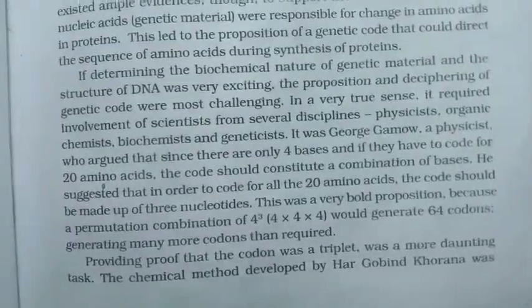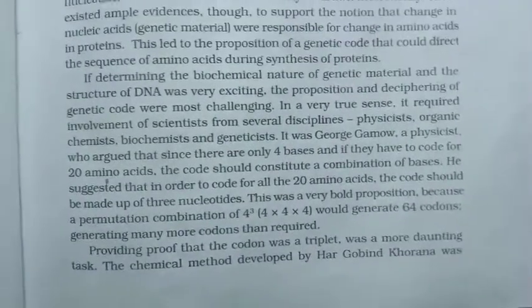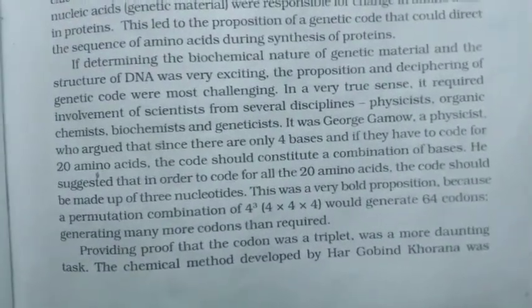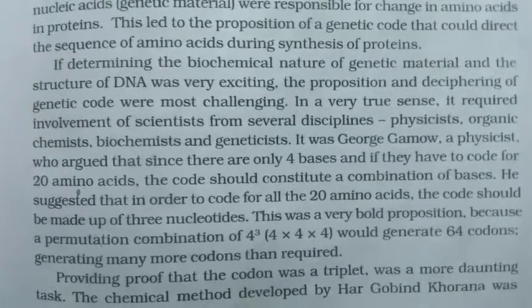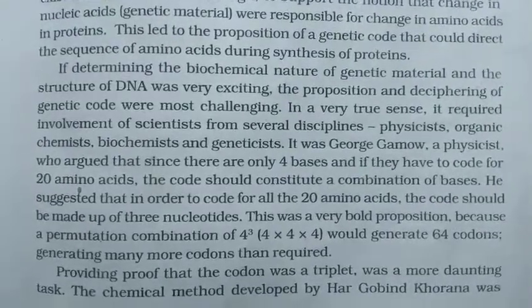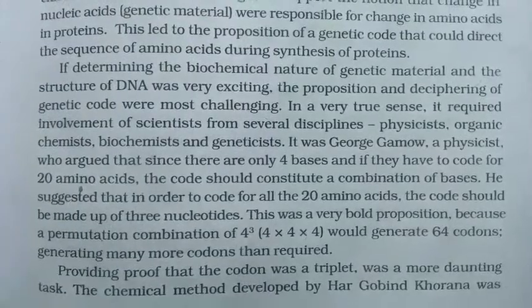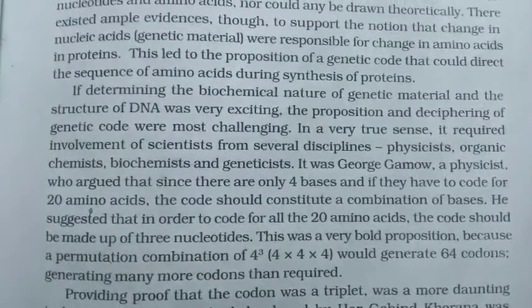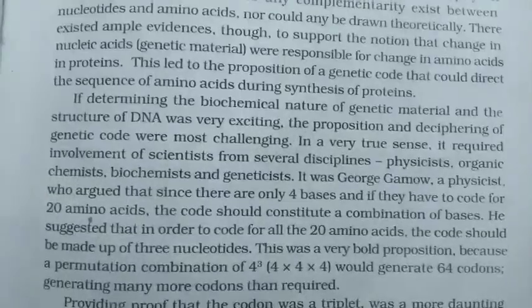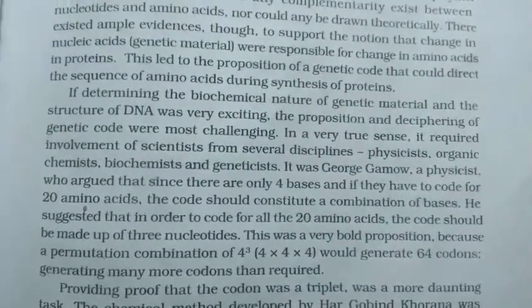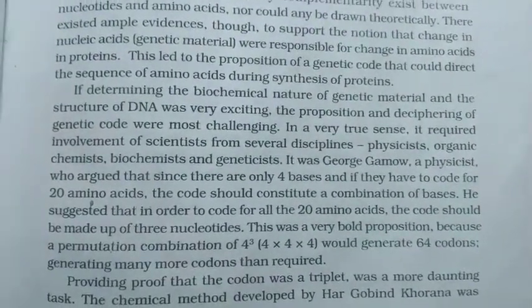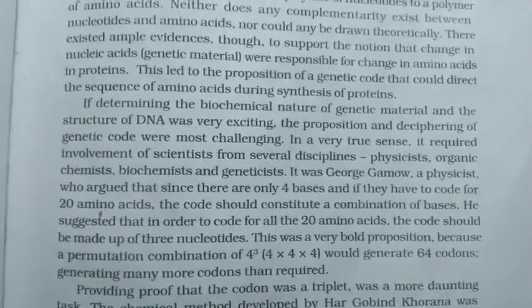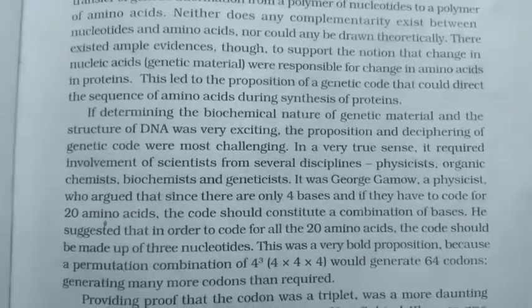These disciplines included physicists, organic chemists, biochemists, and geneticists. It was George Gamow, a physicist, who argued that since there are only four bases and they have to code for 20 amino acids, the code should constitute a combination of bases. He suggested that the code should be made up of three nucleotides. This was a bold proposition because a permutation combination of 4 to the power 3 would generate 64 codons — that is 4 × 4 × 4 = 64 codons — generating many more codons than required.